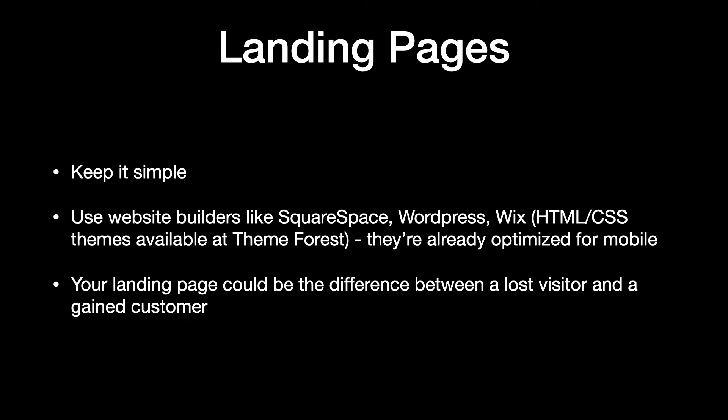Now that you understand who you're trying to get to, let's look at the how. First, and very importantly, you need to have a killer landing page or website that clearly and simply communicates what you're trying to do while talking to your prospective customer. Keep it simple — don't over-communicate, don't have paragraphs and paragraphs of text. Use a website builder like Squarespace, WordPress, or Wix. They're already optimized for mobile. Don't spend too much time hand-coding your website if you don't have a marketing team. There are plenty of great templates that will help you get started and have a new site or landing page up very quickly. Your landing page could be the difference between a lost visitor and a gained customer.